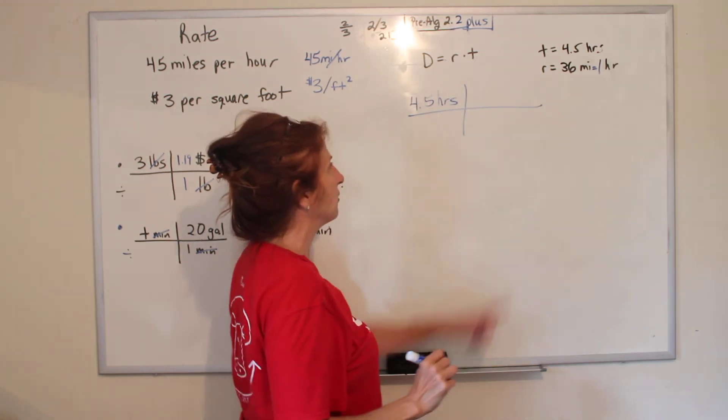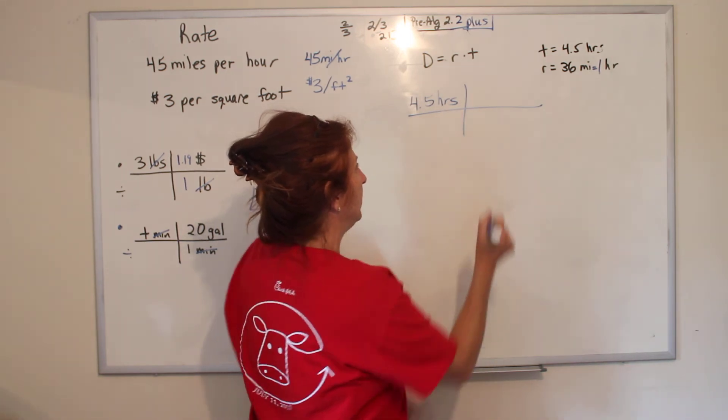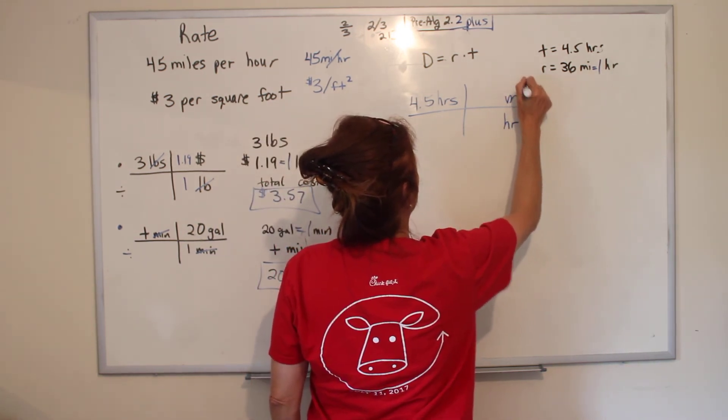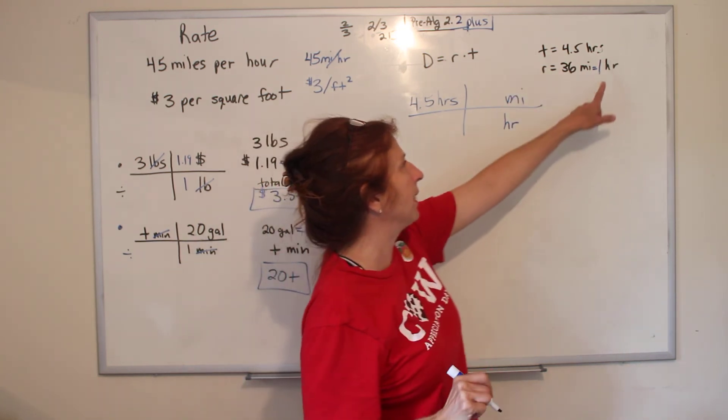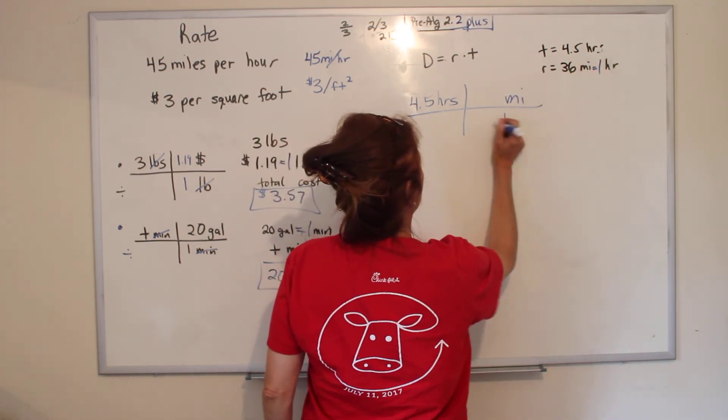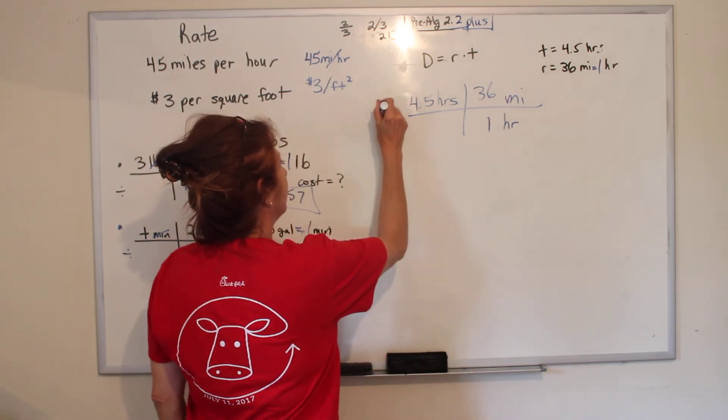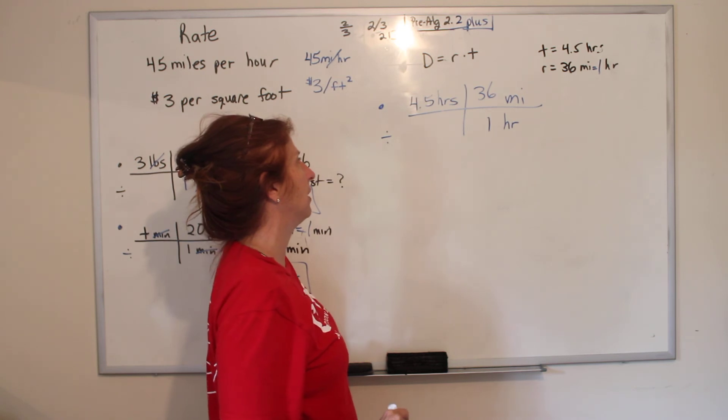We put the same unit of what we know on the bottom. And then what we want to change it to, we write on top. We write the numbers that go with those units. One goes with hours. 36 goes with miles. Anything on top, you multiply. Anything on bottom, you divide. Hours cancel out because you have one in the numerator and one in the denominator.